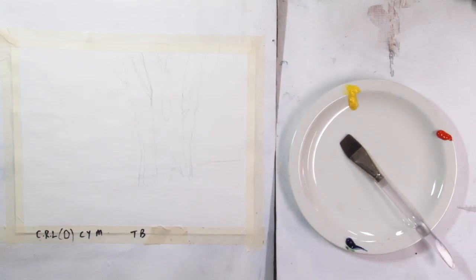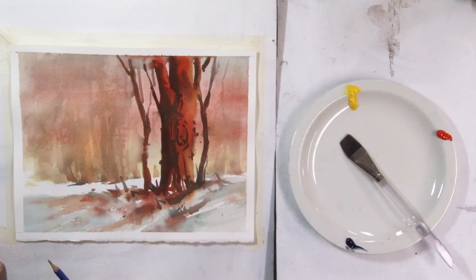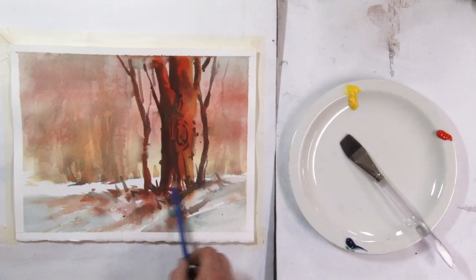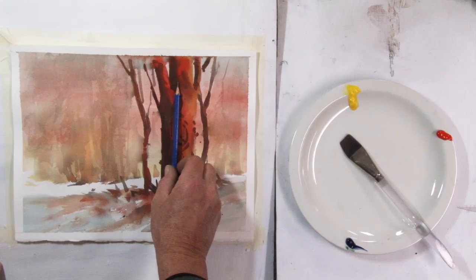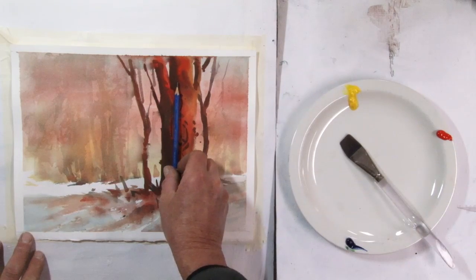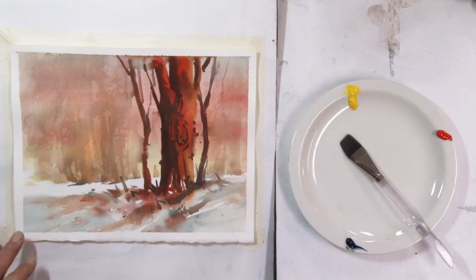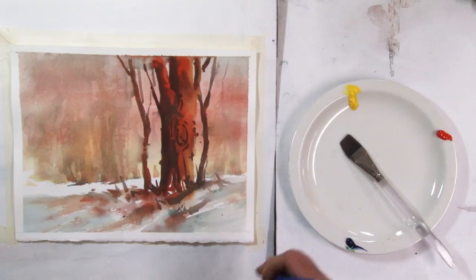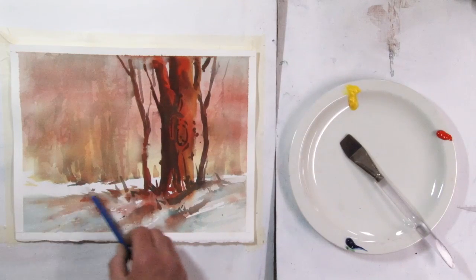Just before we begin, I'm going to bring in here a sample that I did. Basically in this painting we have three areas, we have this entire background, we have the tree which is the main subject, and we have the foreground, and we're going to do each of them separately.